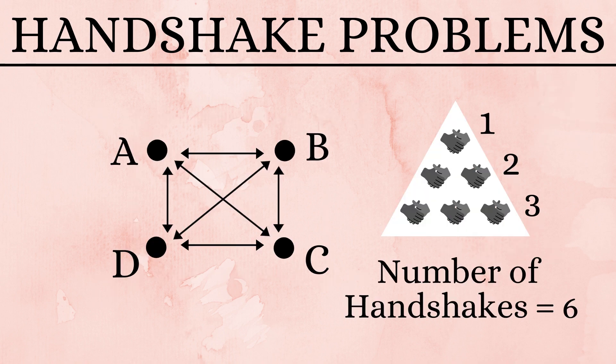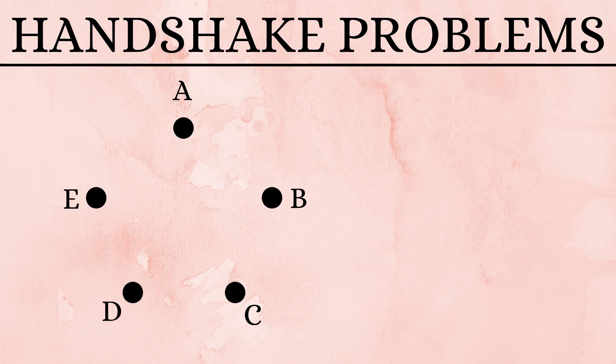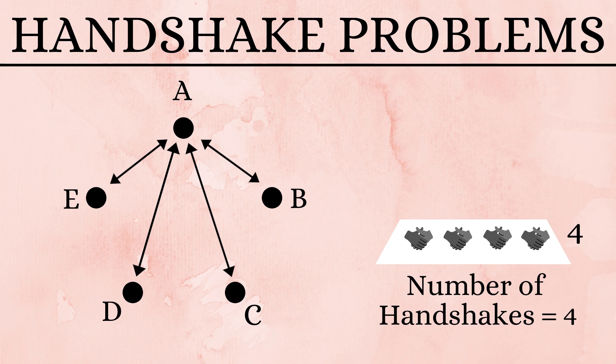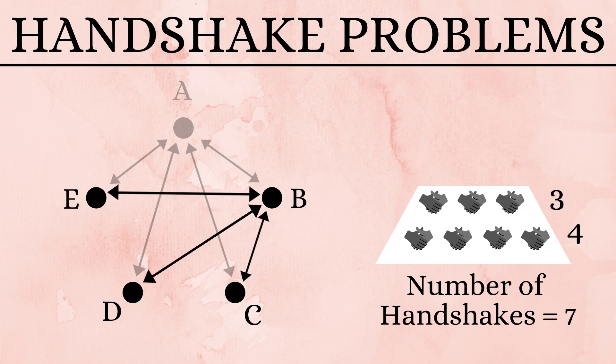Now let us consider five people A, B, C, D and E. A shakes hand with four other people B, C, D and E. B shakes hand with C, D and E.